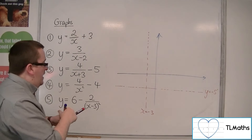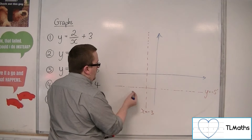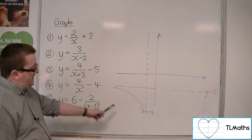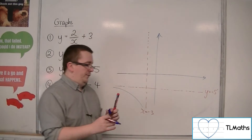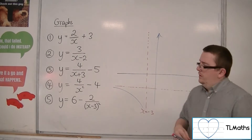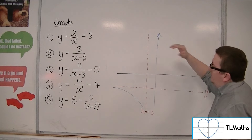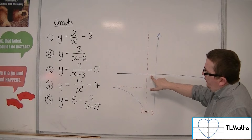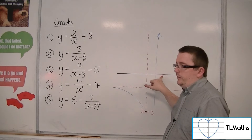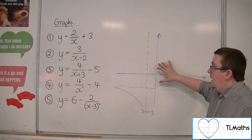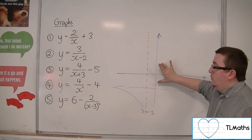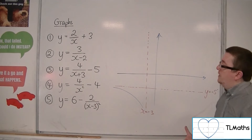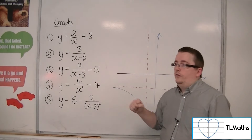The curve must approach both of these asymptotes. The lower section of the curve is clear, but for the upper part we need to be careful. Does the curve cross the x-axis to the left or to the right of the y-axis? Does it cross the y-axis above or below the x-axis? Before drawing this part, we need to solve for those intercepts.